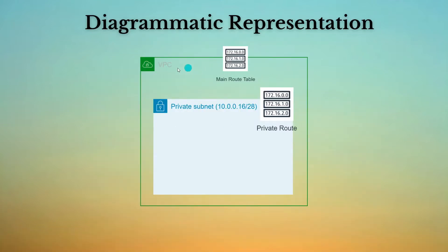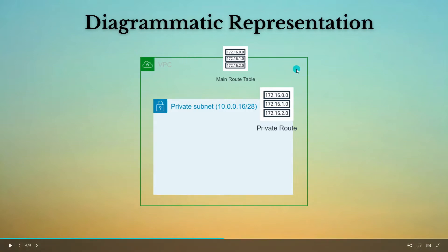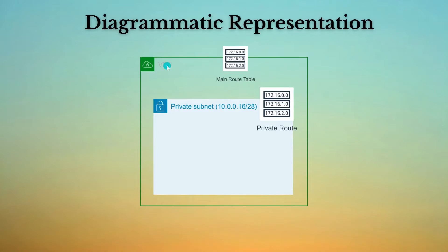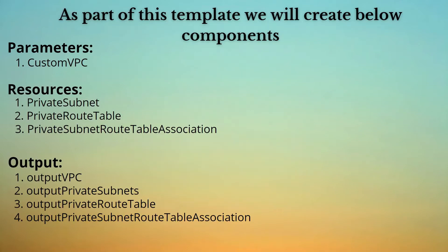Let's go ahead and understand what has already been implemented as part of the VPC and what we are going to implement. In this diagram we can see that we have already deployed a VPC. This is a private VPC, and on creation of this private VPC, automatically our main route table gets created and associated. In this tutorial we are going to create a private subnet, a private route table, and add a private route into this private subnet.